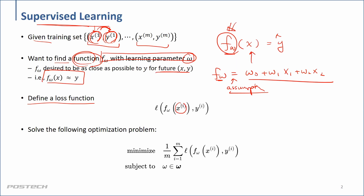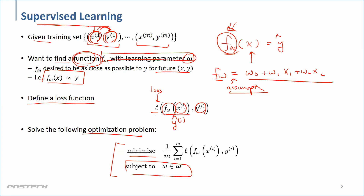In many cases we define loss functions or objective functions in optimization terms. We have y-hat and the true labels, and we define a loss between them. There are many definitions for loss — we can use least squares, or for classification we can use cross-entropy. Then it turns into an optimization problem where we minimize the loss function, with or without constraints depending on the problem.